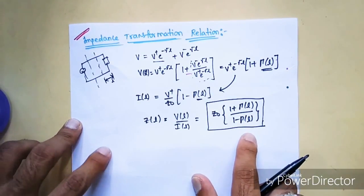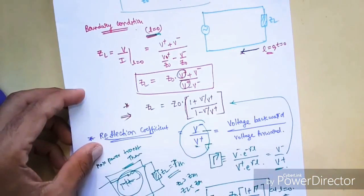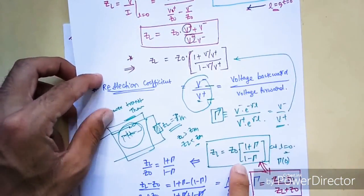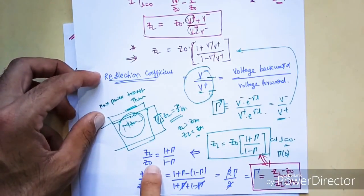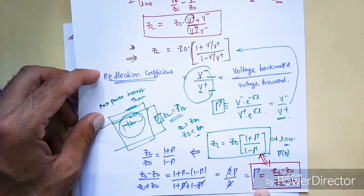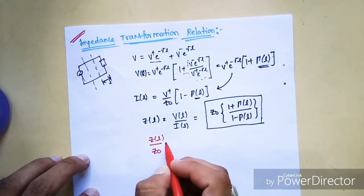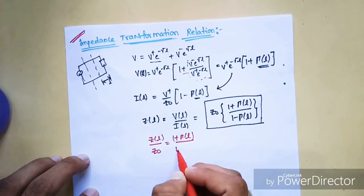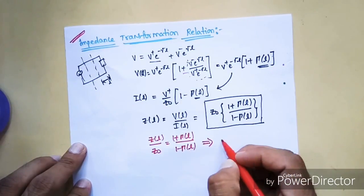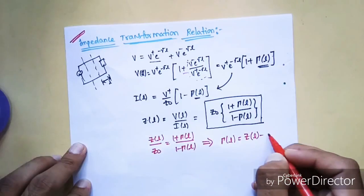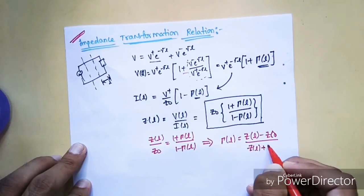Now we have to proceed further. Similarly to what we did in an earlier video, where we used componendo and dividendo to find ρ from the equation by sending Z0 to the left-hand side, I can send Z0 to this side: Z(l) / Z0 equals (1 + ρ(l)) / (1 - ρ(l)). By applying componendo and dividendo, I can get ρ(l) equal to (Z(l) - Z0) / (Z(l) + Z0).